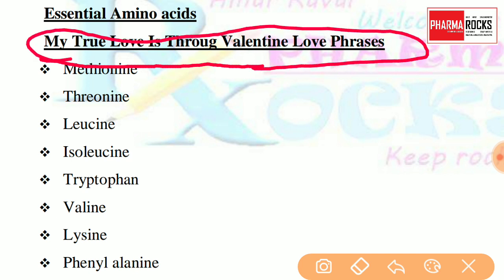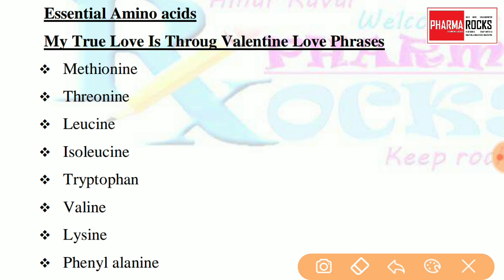The next trick helps you easily remember the Essential Amino Acids. The phrase to remember is 'My True Love'. M stands for Methionine, T stands for Threonine, L (from Love) stands for Leucine, and I stands for Isoleucine. Then True stands for Tryptophan.